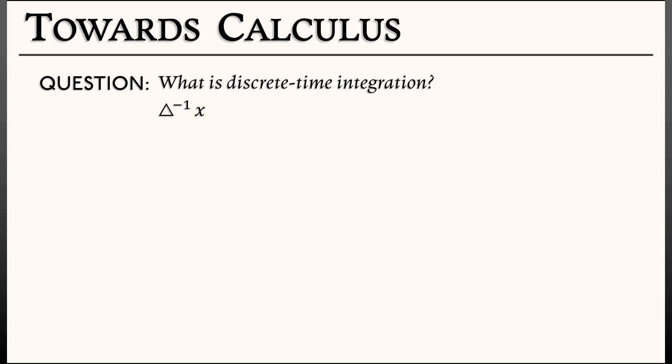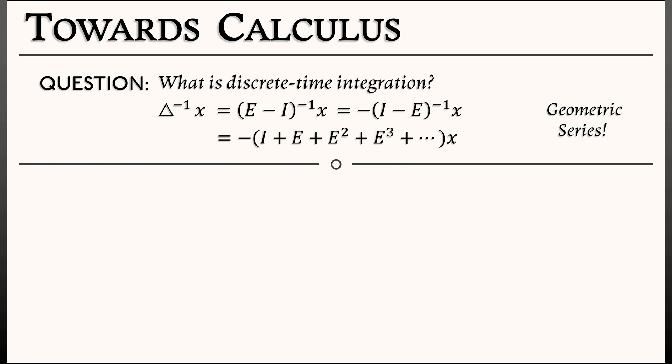What would delta inverse applied to x do? Well, by our lemma, delta is e minus i. So I need to take the inverse of that operator. I wonder. You know, if I factor out a minus sign and then I'm looking at the inverse of i minus e, then I bet I could apply something like a geometric series to this operator and get that the inverse of i minus e is really i plus e plus e squared plus e cubed, etc, going all the way down the line. Does that work?